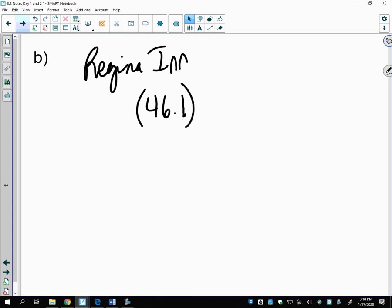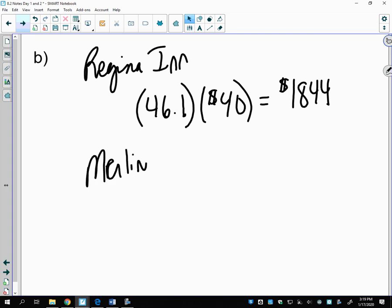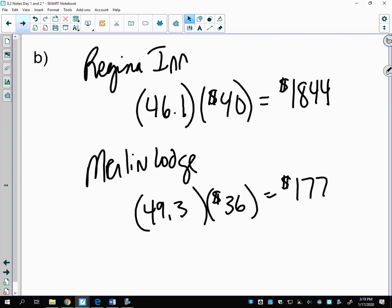They made a profit of $40 per day, so when you multiply that together, the expected daily profit is $1,844 per day. The Merlin Motor Lodge, the average number of rooms was 49.4, but their average daily profit was only $36, and that gives us $1,778. If you're trying to compare who makes the most money, you're going to go with the Regina Inn because they're making on average more daily profit.